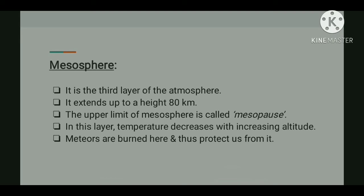The third layer is the mesosphere — it is the coldest among all layers of the atmosphere. In this layer, meteors are burned due to friction. It extends up to a height of 80 kilometers, and temperature again decreases with increasing altitude. The upper limit of the mesosphere is called the mesopause.